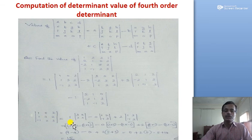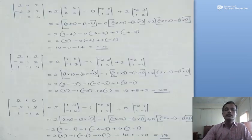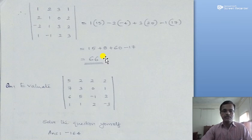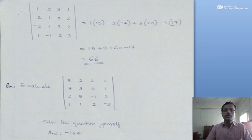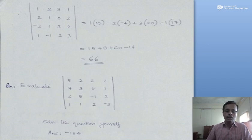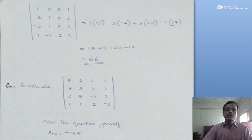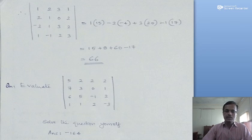We compute each of the third order determinants and combine the values. The final answer for the fourth order determinant is minus 164. If you have any questions, we will continue in the next class. The concept of determinants is now clear. Thank you.